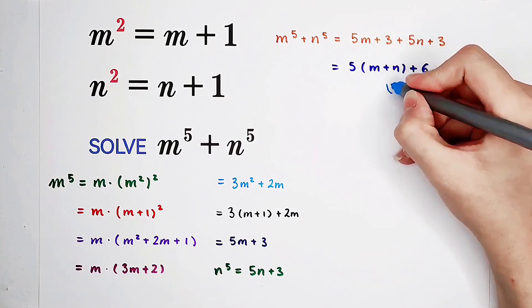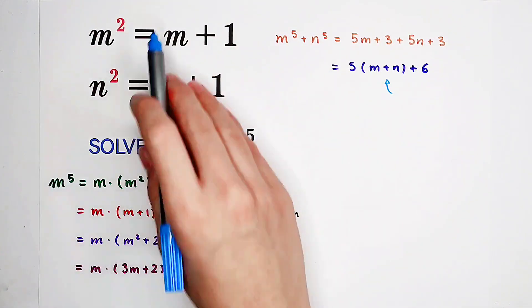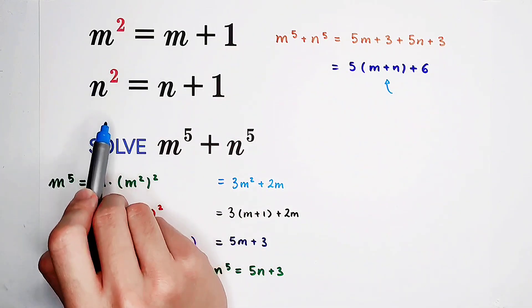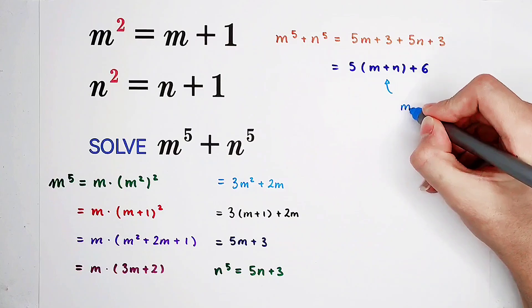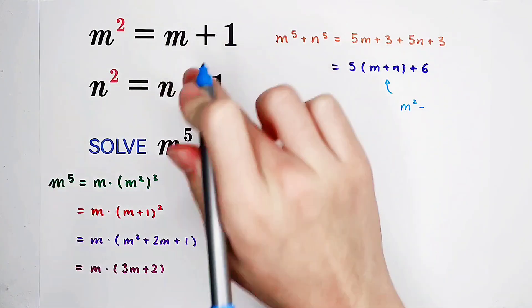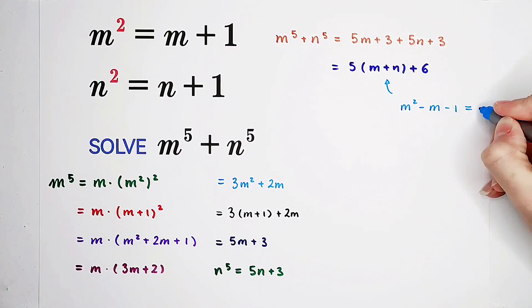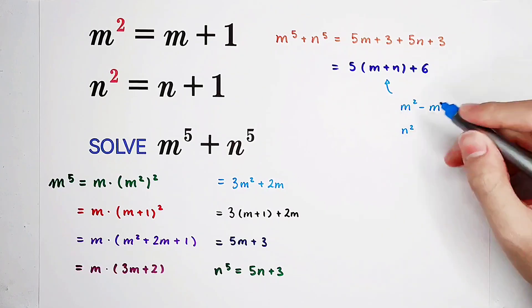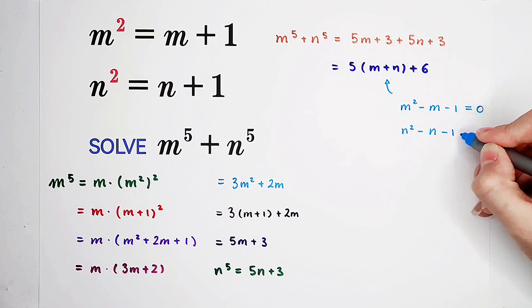Then you see, here appears m plus n. So how should I solve it? Have a look at our original equations. m squared is m plus 1, n squared is n plus 1. So now if we subtract m then subtract 1 on both sides, we get this equation. For the first equation, it's this. For the second equation as well, it is about n. n squared minus n minus 1 equals 0.